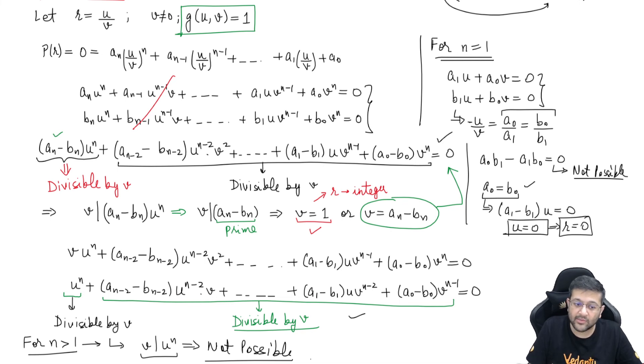So all possibilities are covered. Either v is 1, which makes r an integer, or v equals a_n - b_n. We proved that case is not possible for n greater than 1. For n equal to 1, it's also not possible except when u equals 0, making r equal to 0, which is an integer. We have explored all possibilities and proved that any common rational root must be an integer.